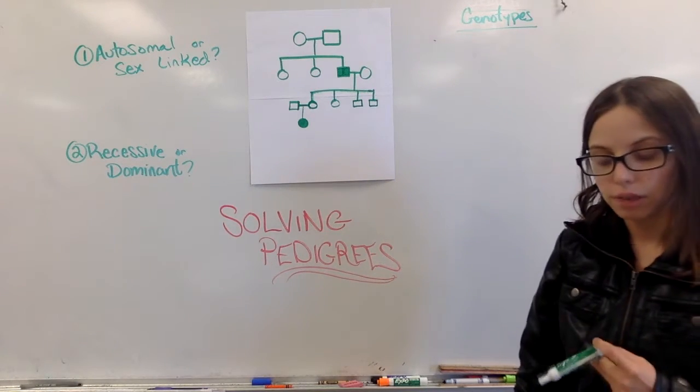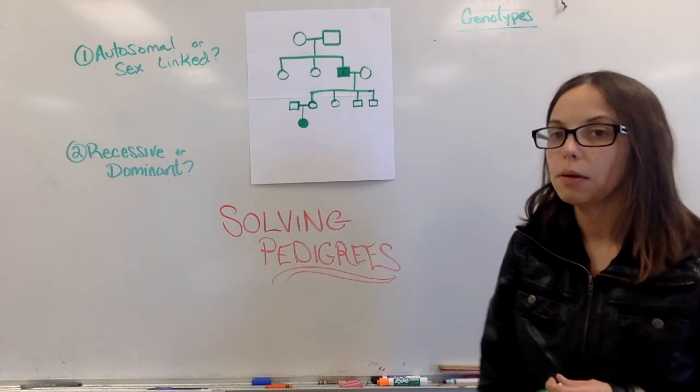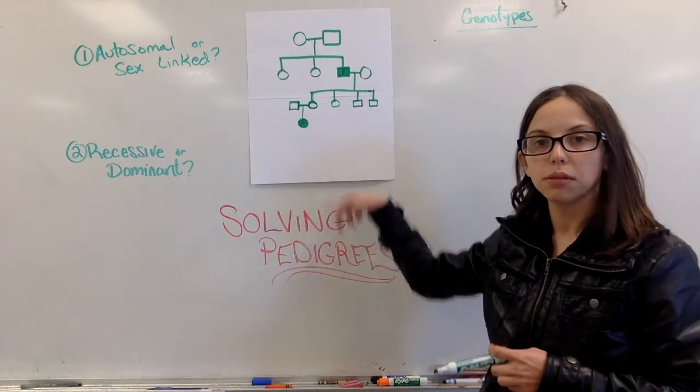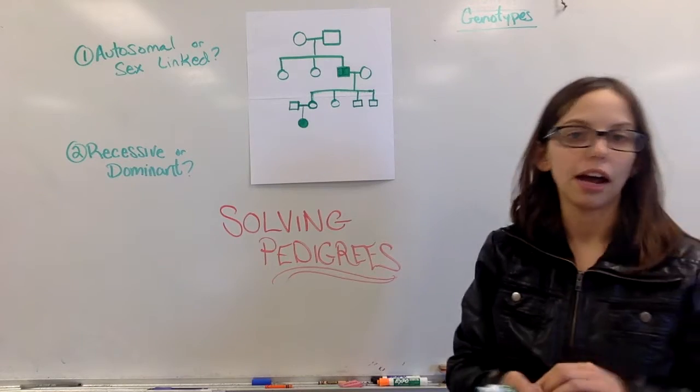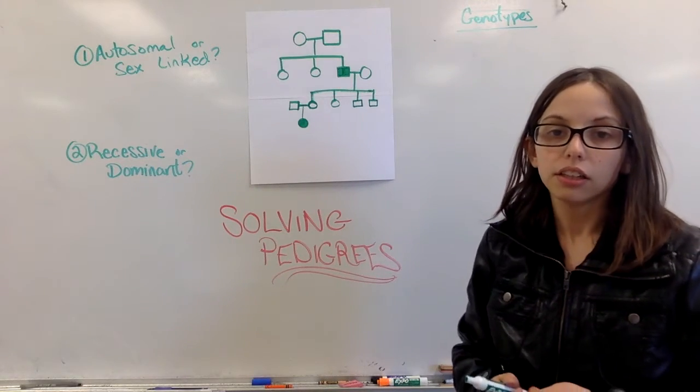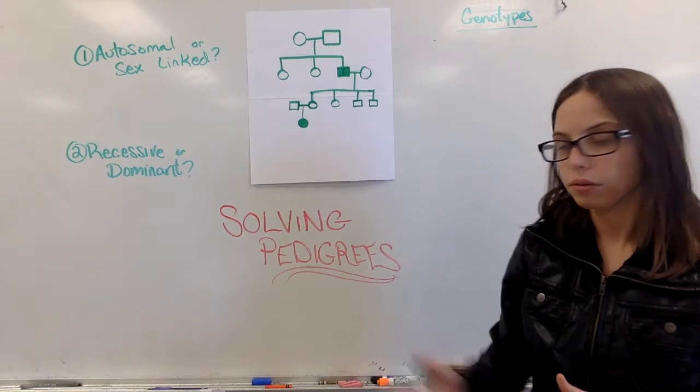I've made a video and have lectured in class about how to read a pedigree, what these little shapes mean, what it means to be a filled in shape versus a not filled in shape or a half shaded shape. So now we're going to use those. That's all fine and dandy if you can read it. Now do something useful with it. We're going to solve it.